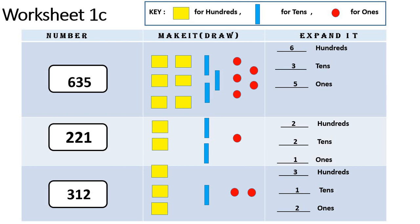Next is 221: draw 2 blocks in yellow, 2 bars in blue, 1 circle in red. Write in expanded form: 2 hundreds, 2 tens, 1 one. Third one is 312: draw 3 blocks in yellow, 1 bar in blue, 2 circles in red. Write in expanded form: 3 hundreds, 1 ten, 2 ones.